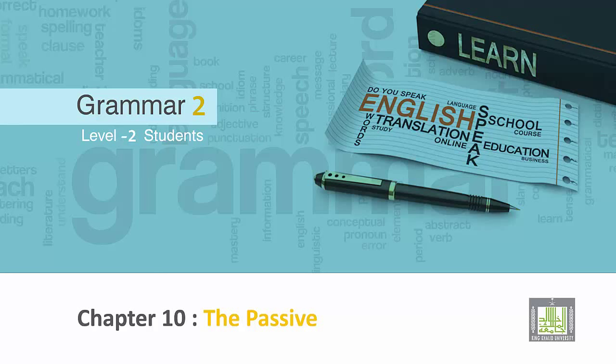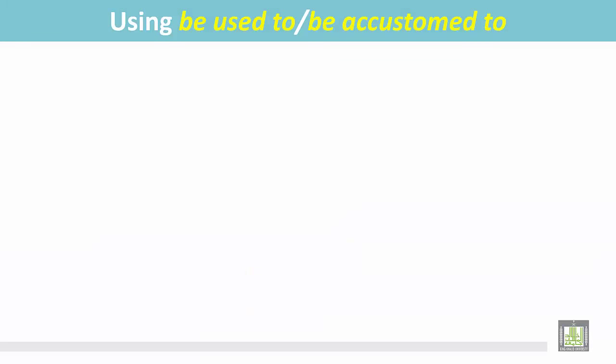Grammar 2 for level 2 students. Chapter 10: The Passive. Using 'be used to' or 'be accustomed to'.